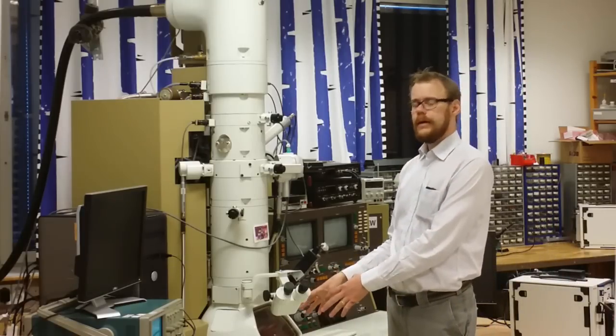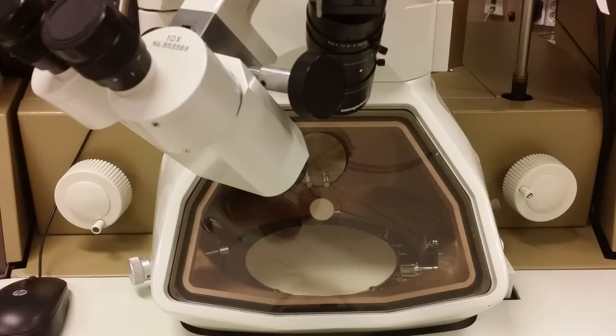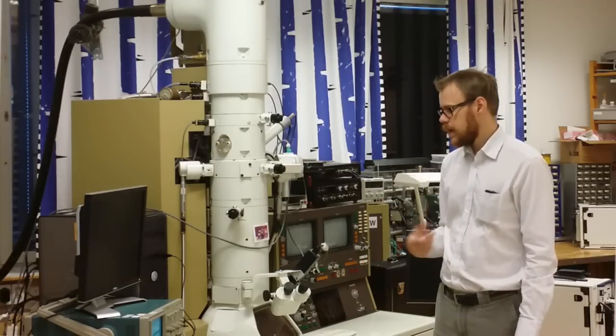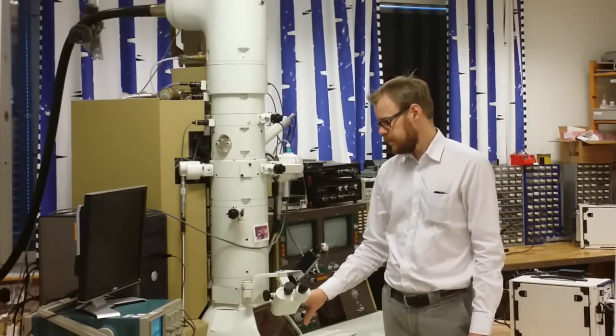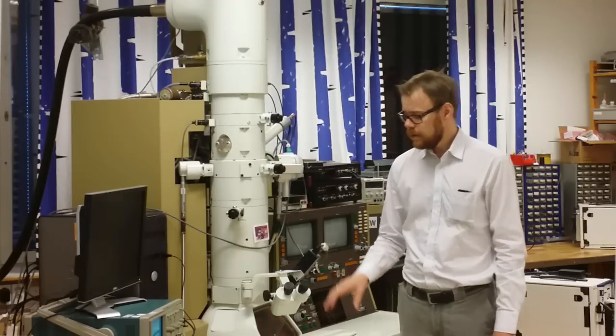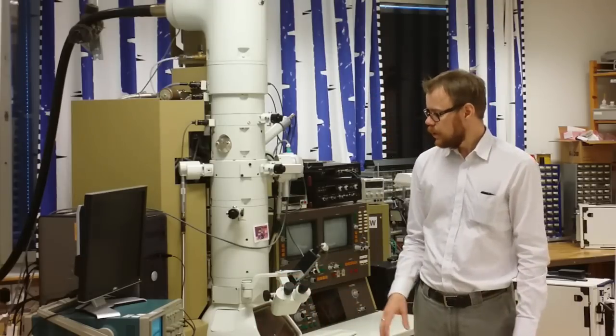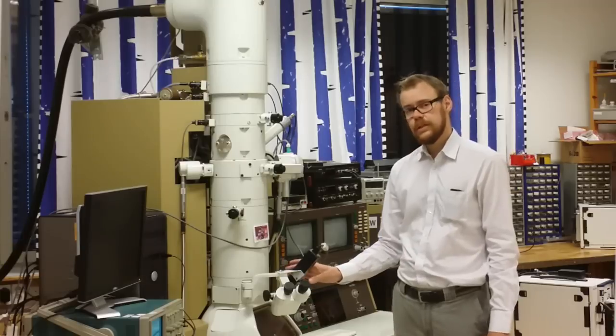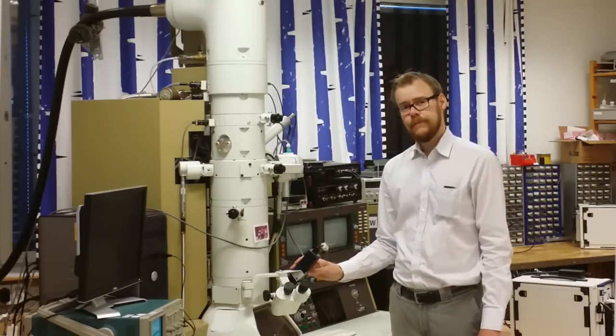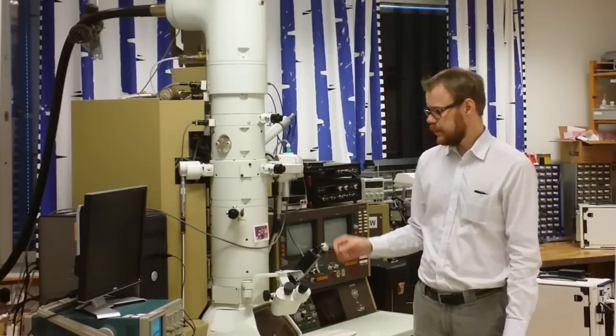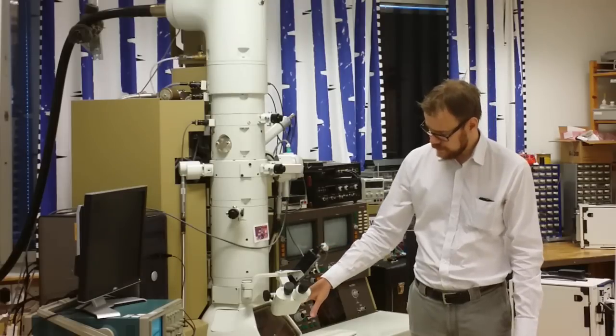At the bottom here you have the viewing screen. That is basically a fluorescent disc. So when an electron hits the dish it glows. And then you can see that with your eyes. So either you view this just by your eyes manually, or you use these binoculars, or perhaps the most common thing is to use a camera. Here we have a very simple camera that is just filming this fluorescent screen.